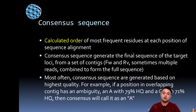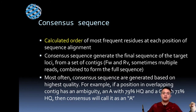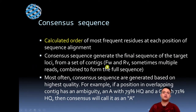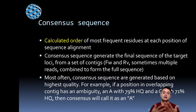As explained in the previous video on genome walking or shotgun sequencing, contig 1 and contig 2 are aligned at overlapping regions, then contig 3 is stitched on — together they form the consensus sequence. It is nothing but a calculated order. Consensus sequence generates the final sequence of the target locus from a set of contigs — for example, forward and reverse reads, or sometimes multiple reads combined to form the full sequence, including internal reads, to increase statistical support.